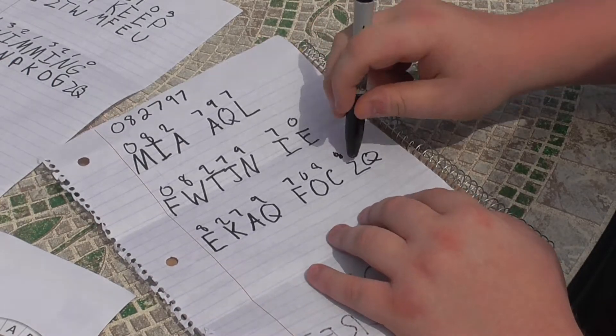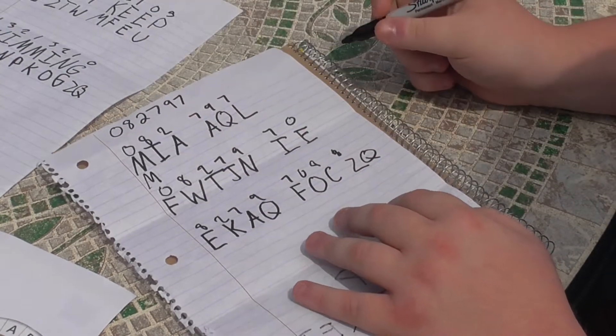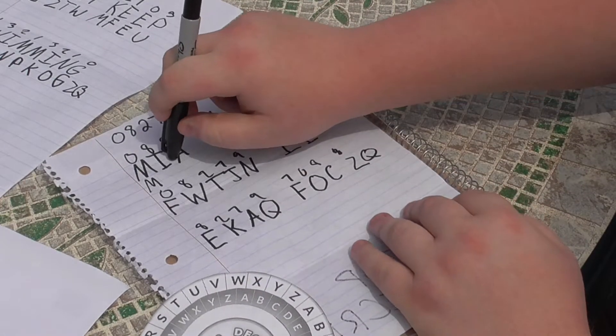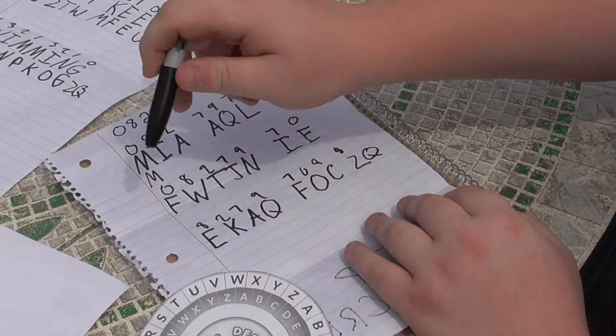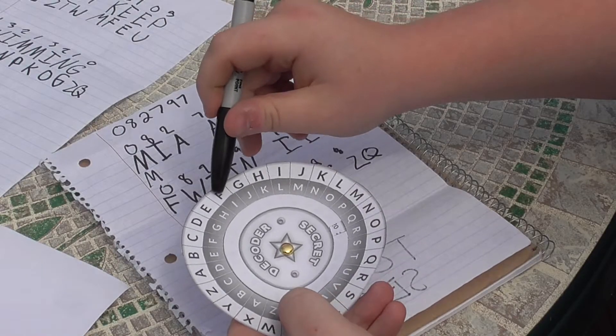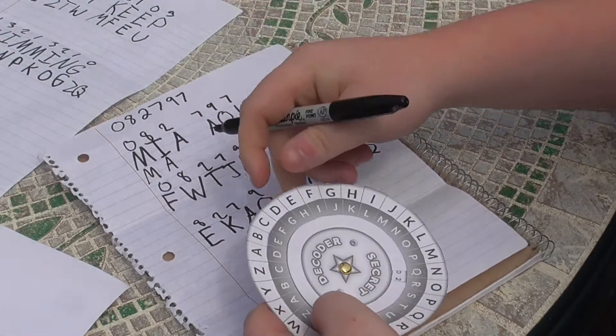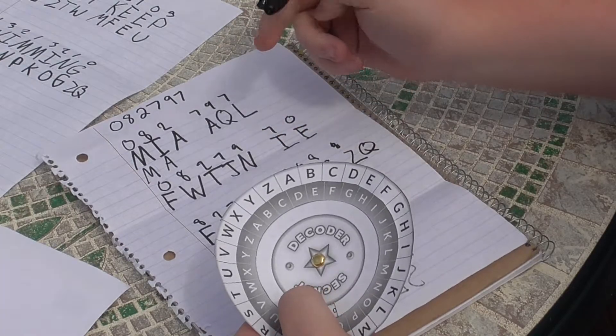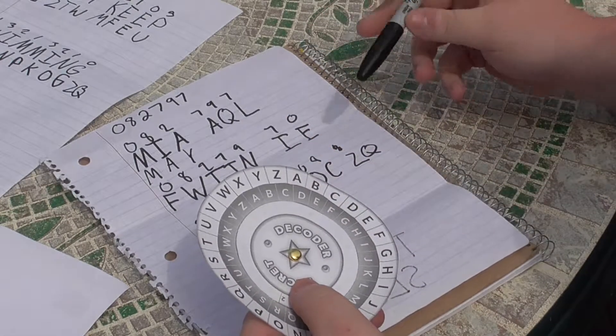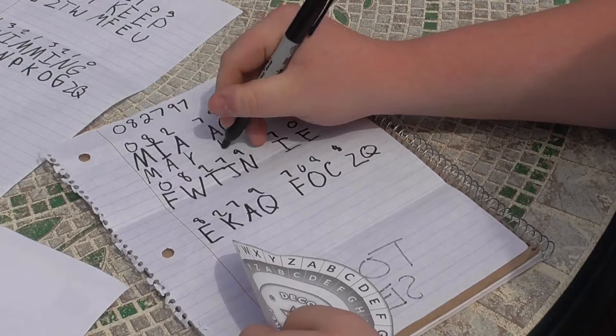Since we're going forward you go backwards. So eight backwards from I—1, 2, 3, 4, 5, 6, 7, 8—which is A. Two back from A is—1, 2—Y. So our first word there is 'May.' Seven from A—1, 2, 3, 4, 5, 6, 7—T. And you keep going until you have your message down.